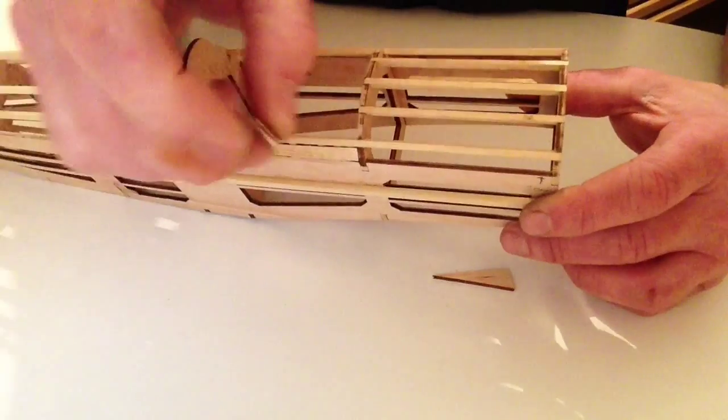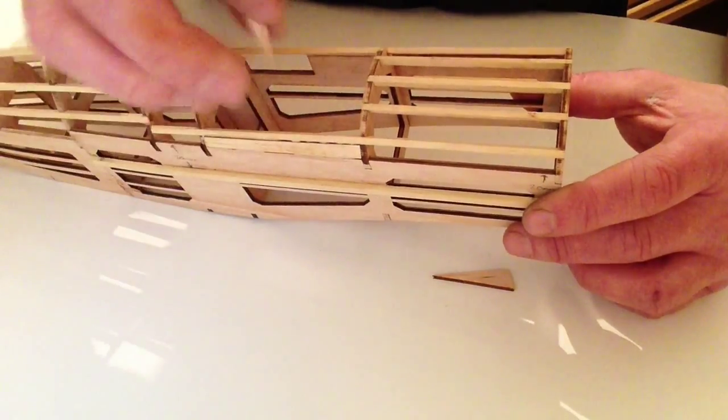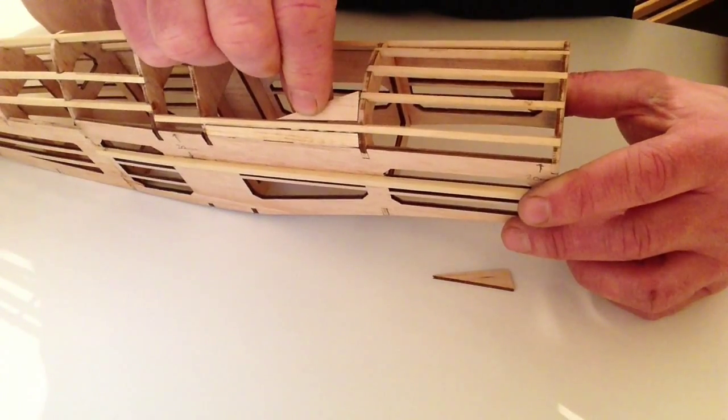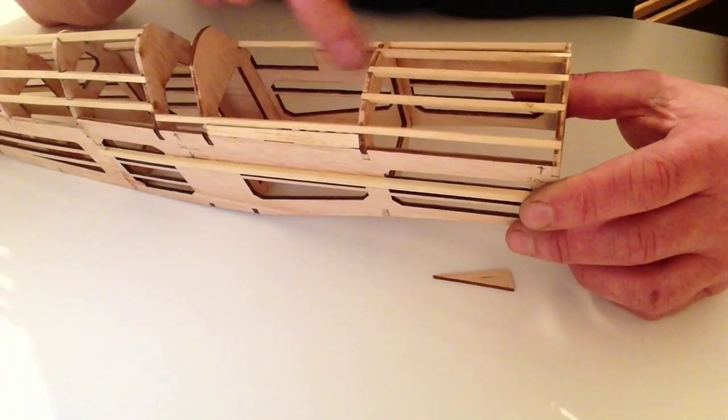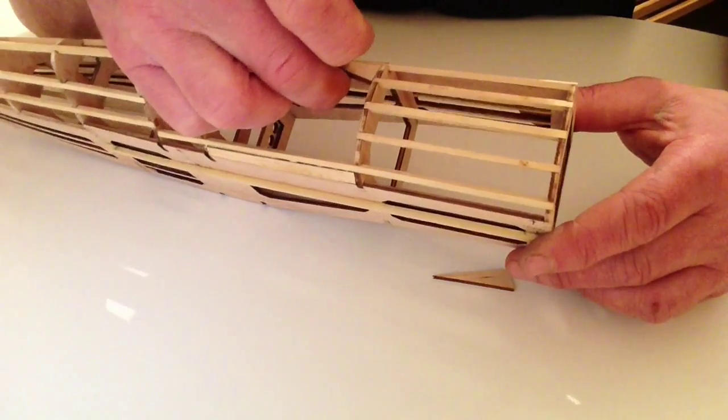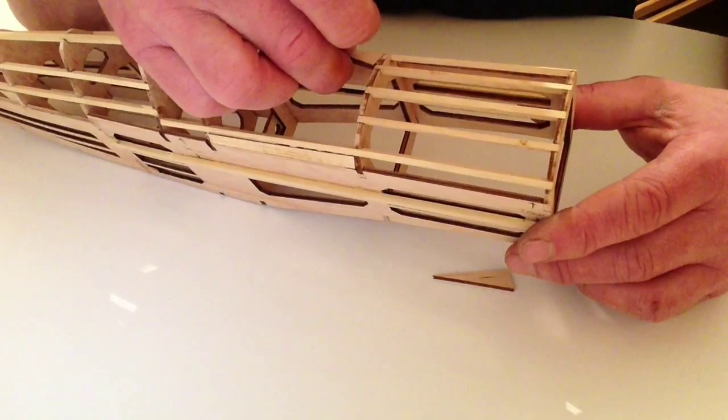Glue it on this end and this surface here so that when it glues into that position, it glues in there. Then with the other one, we're going to be doing exactly the same, just on the other side. Get your glue ready and glue those into position.